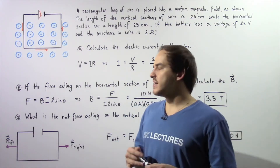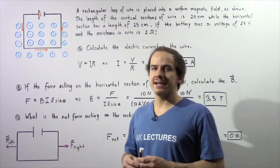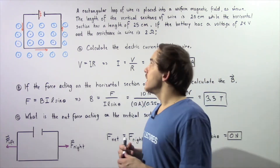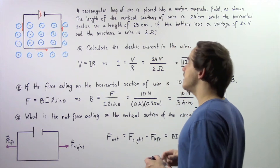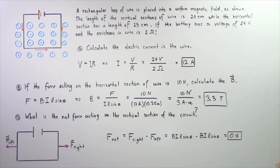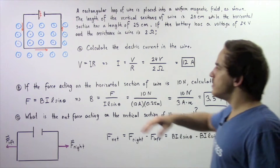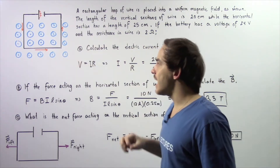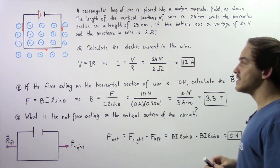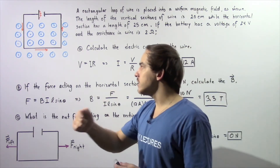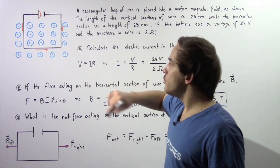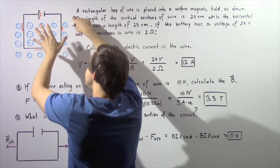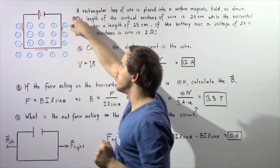Let's look at the following example that deals with forces acting on electric currents and wires as a result of magnetic fields. Suppose a rectangular loop of wire is placed into a uniform magnetic field B, shown in the following diagram. These circles with the dotted side symbolize that our magnetic field points out of the board. Notice only a certain section of our electric circuit is found inside our magnetic field.